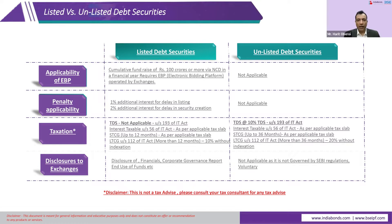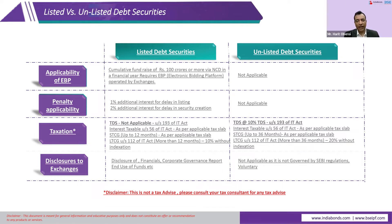In listed debt securities, TDS is not deducted. Whereas in unlisted bonds, 10% TDS is applicable under Section 193 of the Income Tax Act. So whenever you're buying an unlisted bond, 10% TDS will be deducted from your interest income. For example, if you buy a bond at 10% coupon rate, from your interest of 1,000 rupees, 100 rupees TDS will be cut. However, the issuer will issue you a TDS certificate.